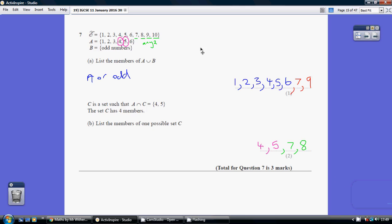Question 7. A is just these numbers here. B are all the odd numbers, but both of these, A and B, are selected out of our universal set, out of these numbers here.